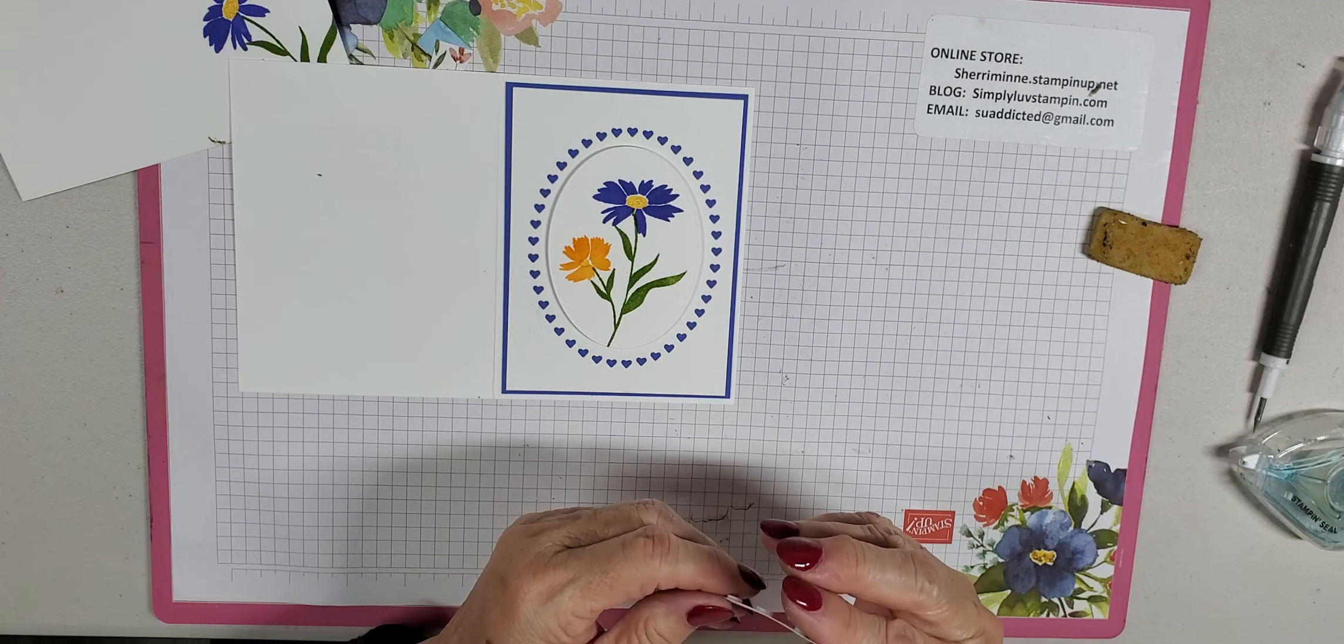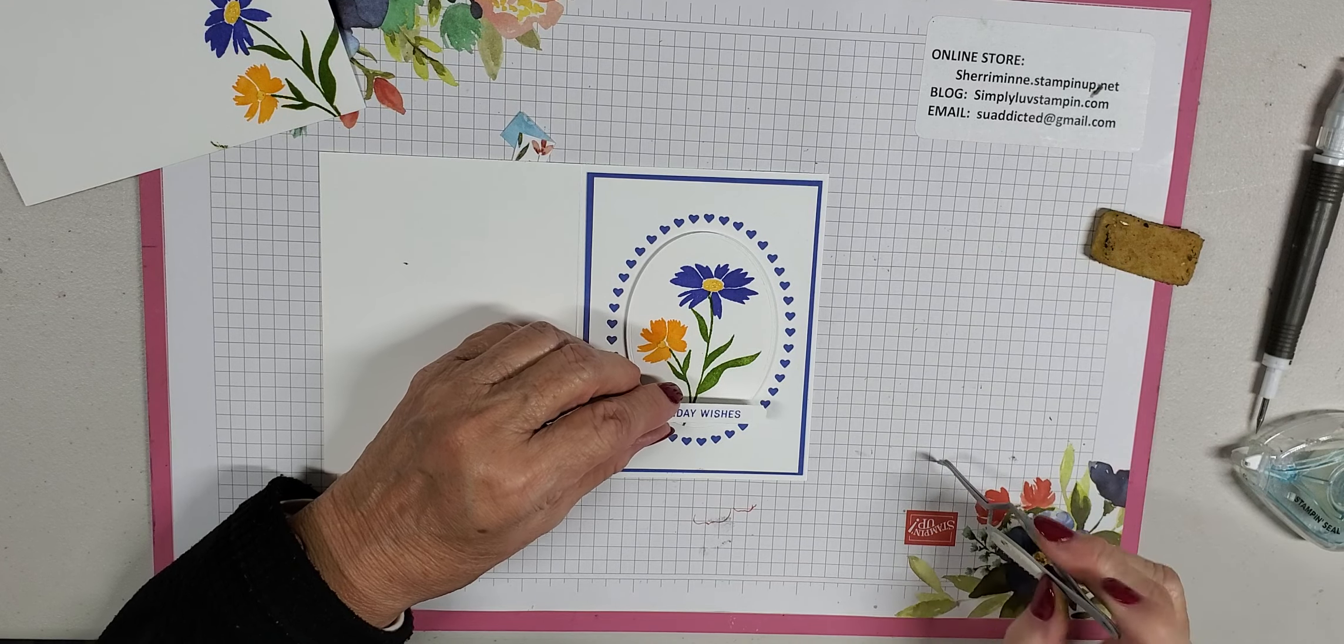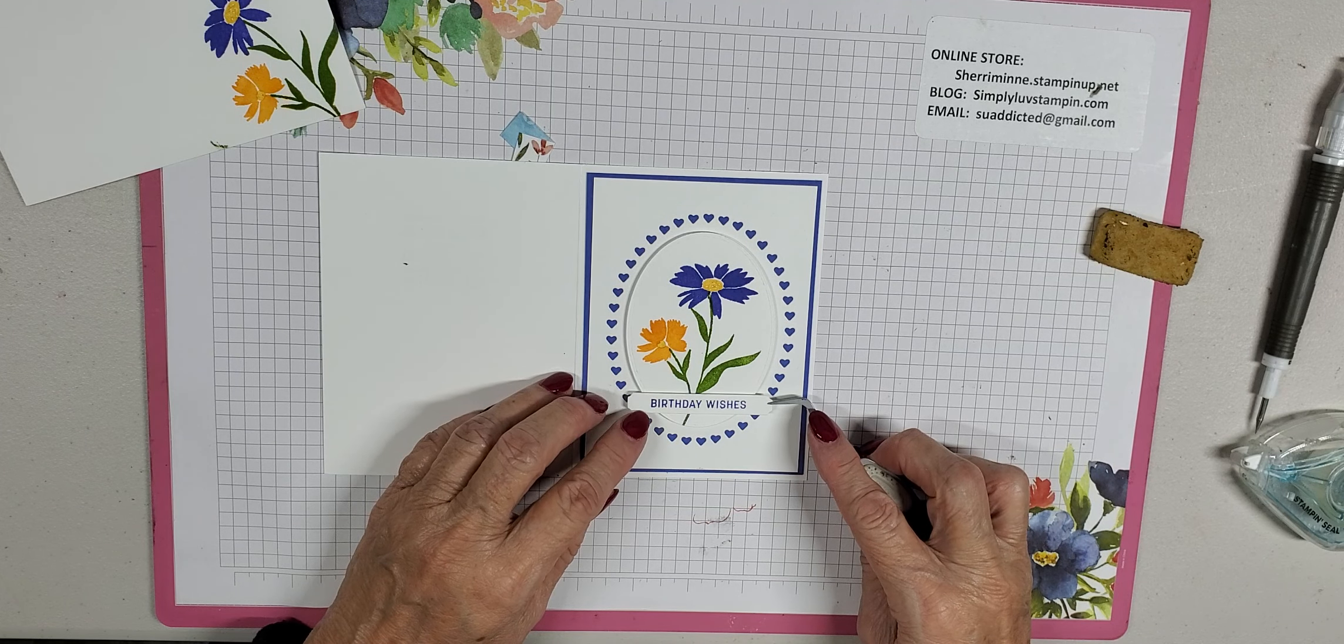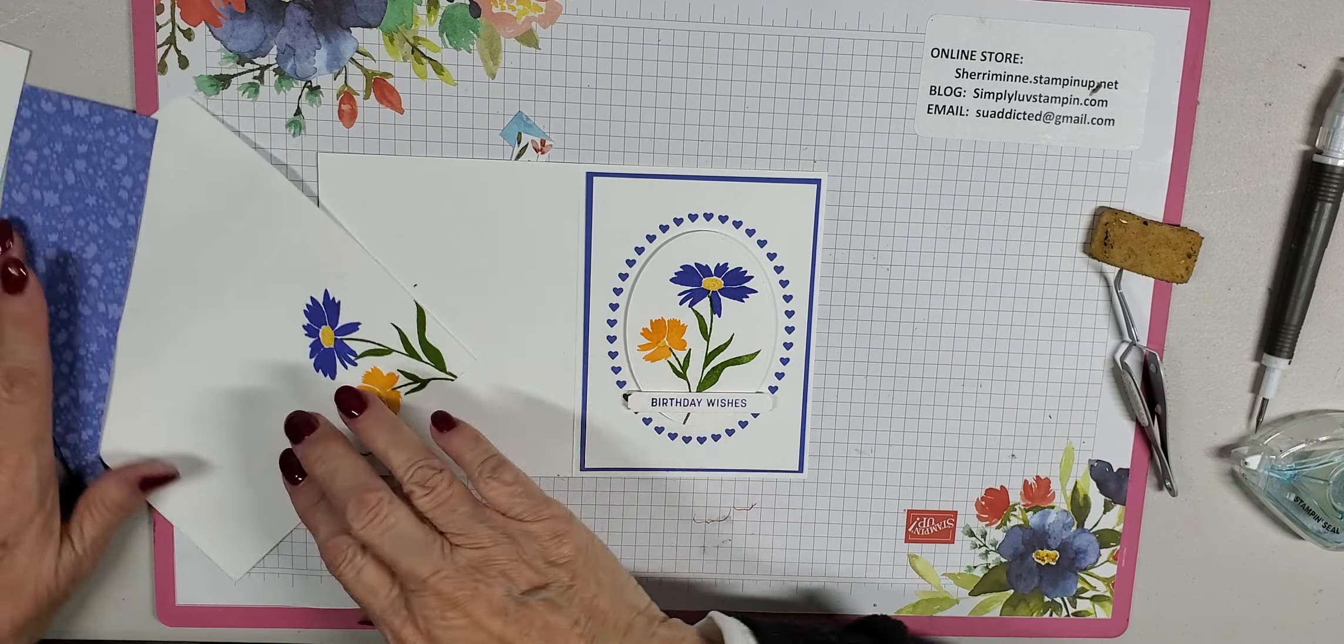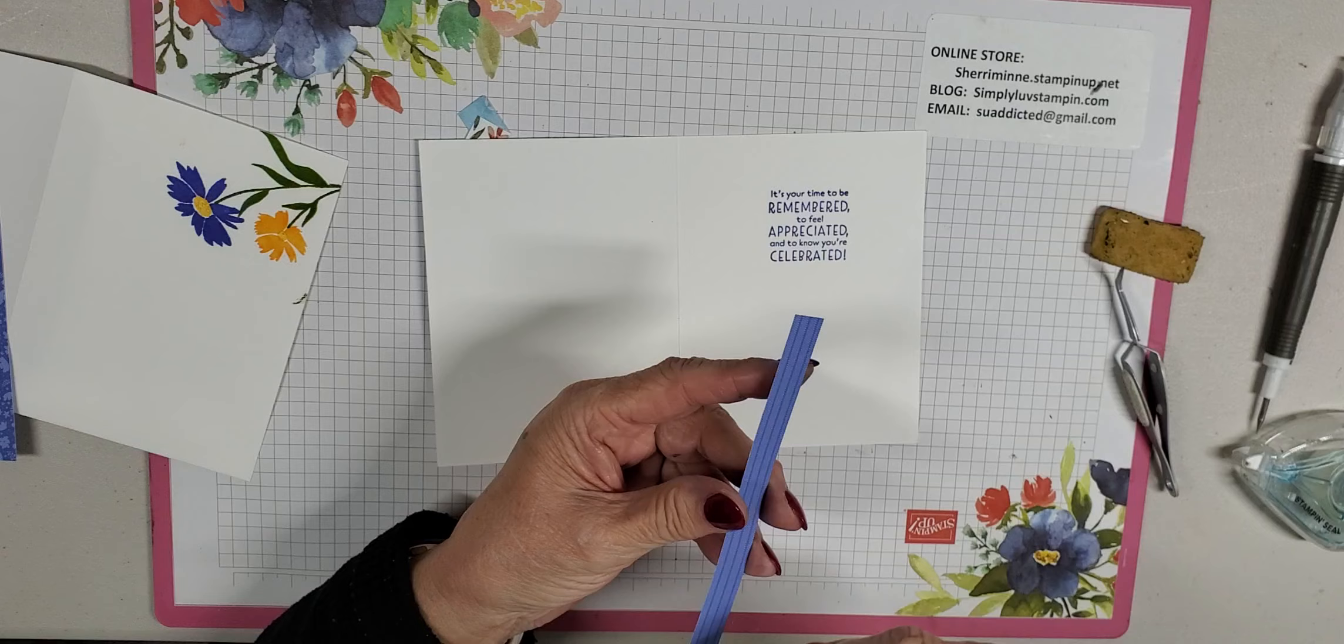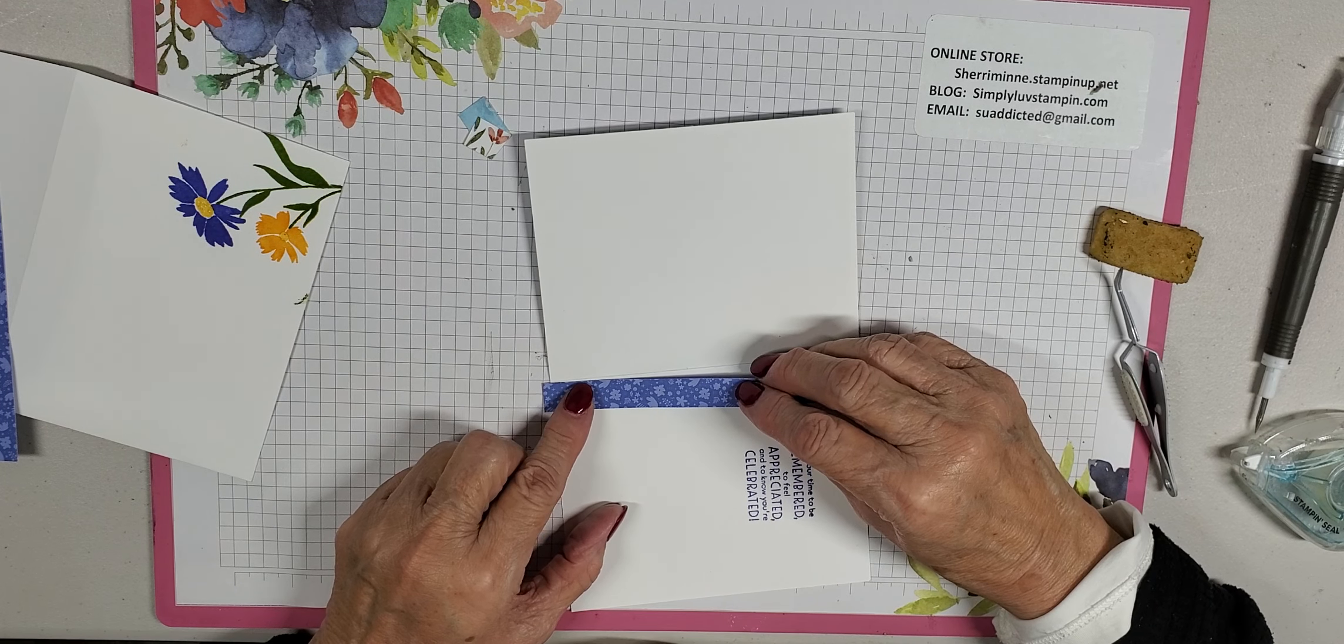So now I'm just going to kind of center this in that oval as best I can. And then I will take my birthday wishes and put it on the front. And what I did is I kind of tried to balance it by having the same amount of this label on each side. And then I just stuck it on there. And then we have to finish up our insides.